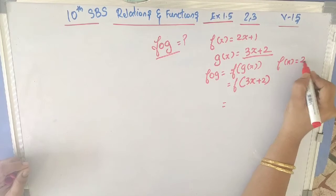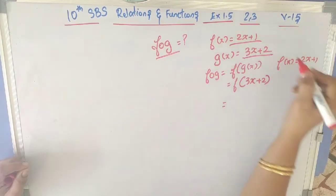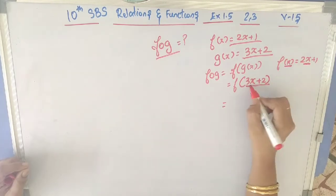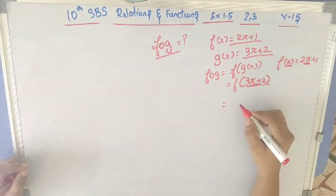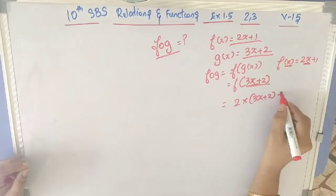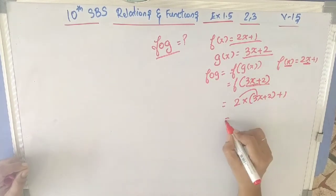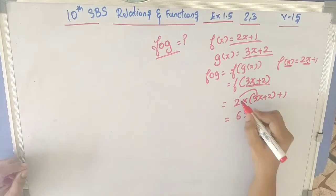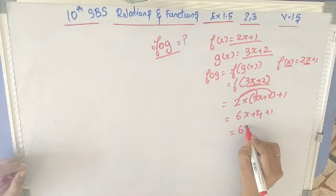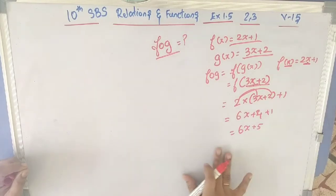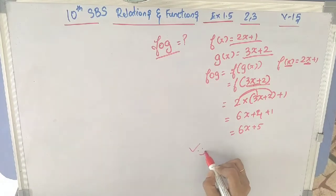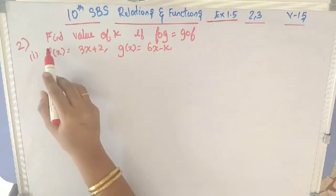So in f(x), instead of x, we are going to substitute 3x + 2. f(x) = 2x + 1, so f(3x + 2) = 2(3x + 2) + 1 = 6x + 4 + 1 = 6x + 5. This is f∘g.